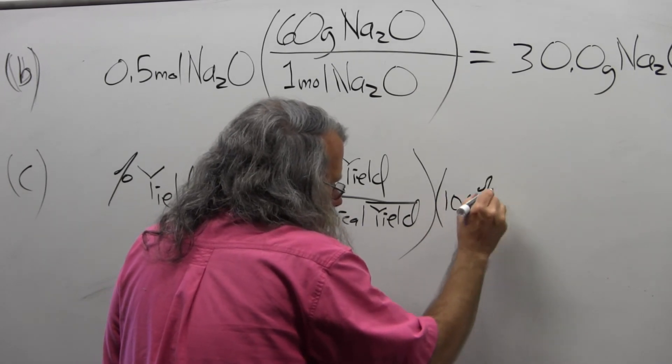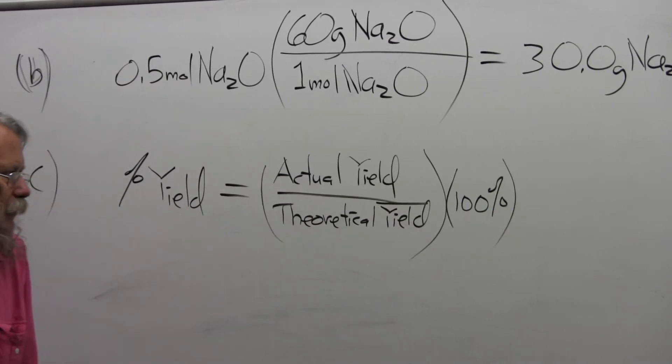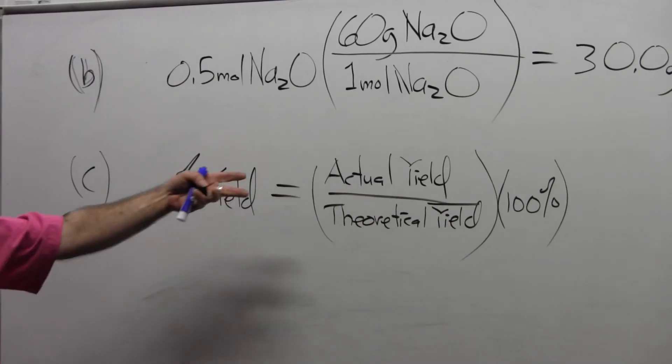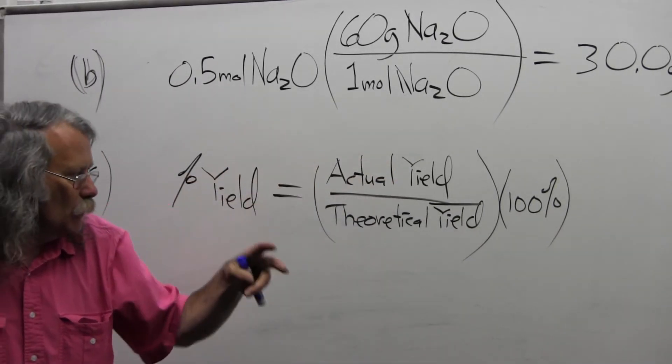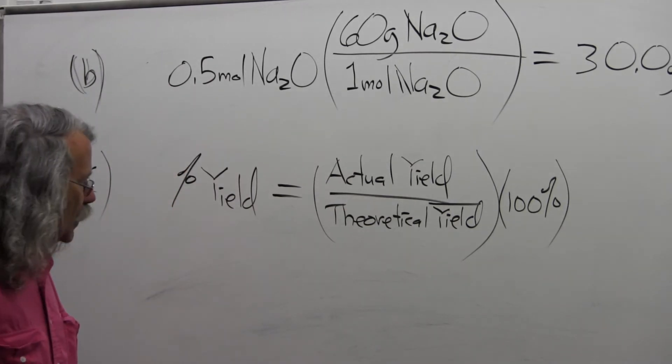We have to cast it in percent, or parts per hundred. And so the actual yield goes on the numerator and the theoretical yield in the denominator. We've already got all the information.